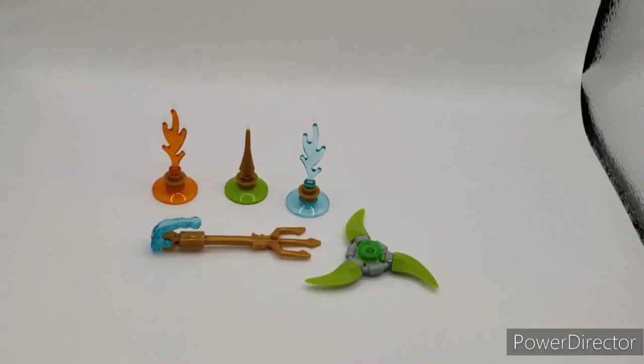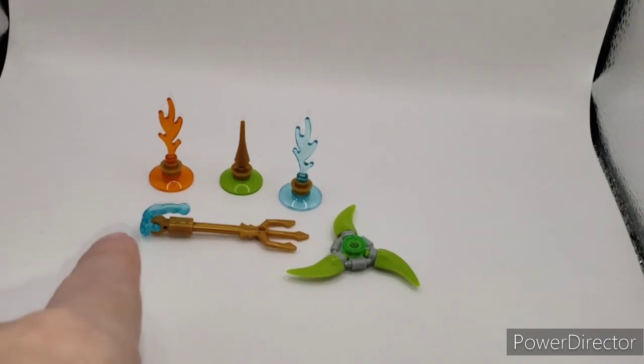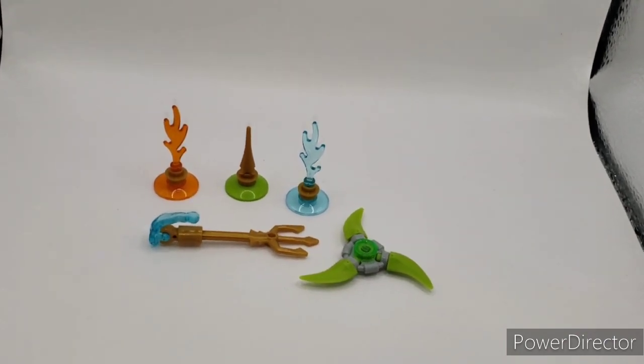Here are the accessories that come in the set. You get fire, water, and a green golden energy spike. You have a water trident and a green shuriken, which is odd for Lloyd because Lloyd doesn't use shurikens, he usually uses like a sword. But these are gimmick sets that we're not supposed to be matching I guess.